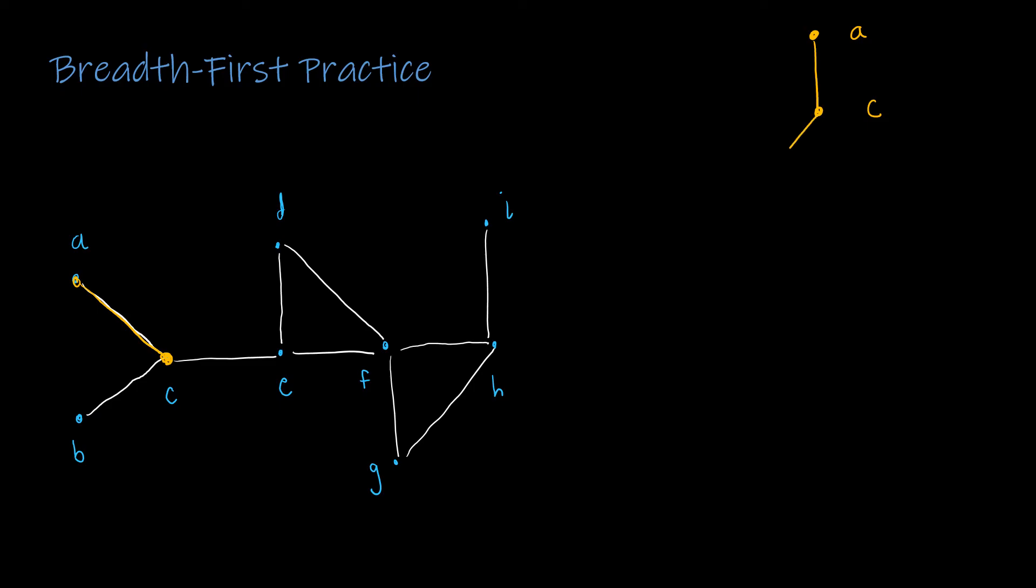C connects to two vertices, B and E. And so now I've visited both B and E. B doesn't have any other vertices adjacent to it. So E is going to connect to both D and F.